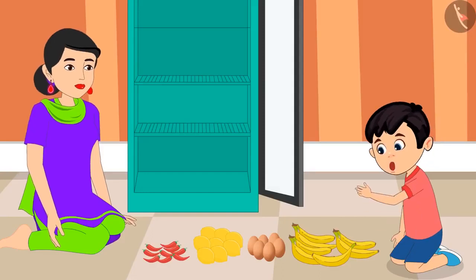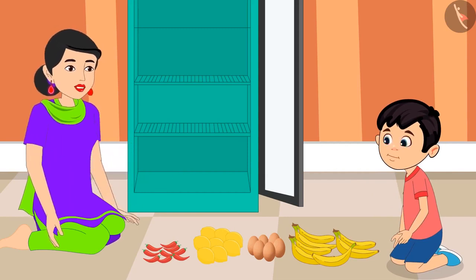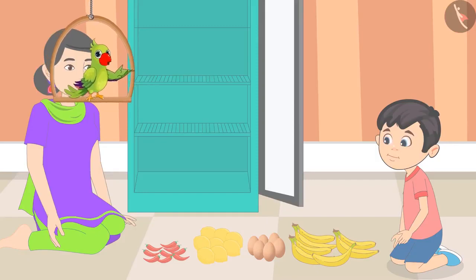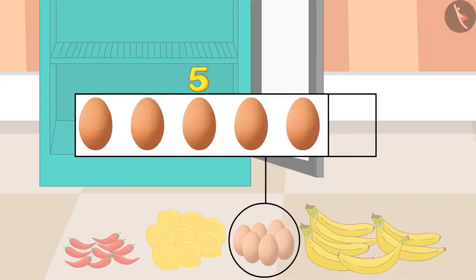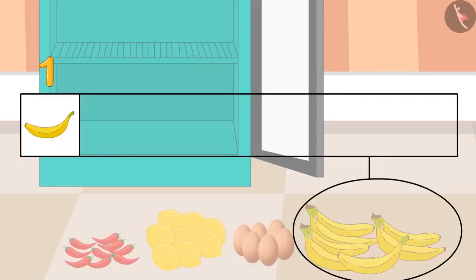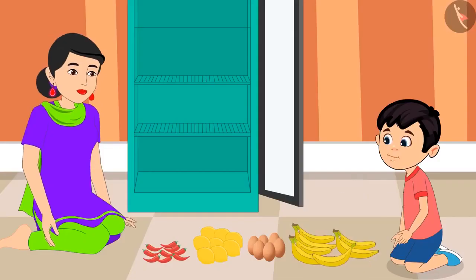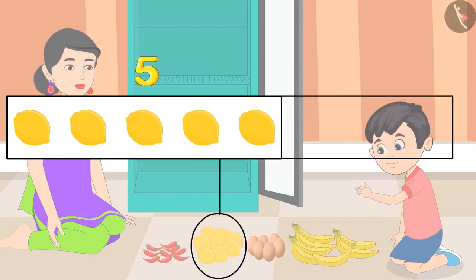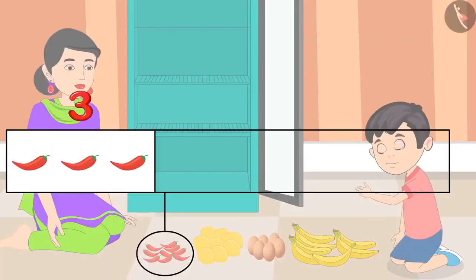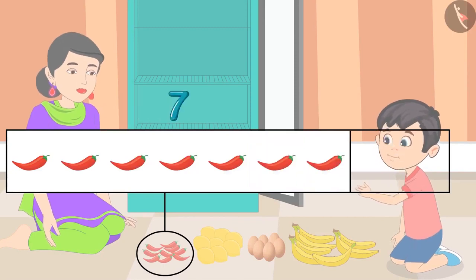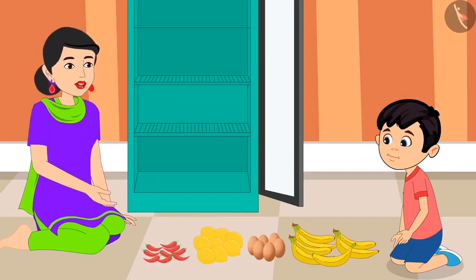Chotu's mother asks him to count each item one by one. Chotu counts: six eggs, seven bananas, eight lemons, and nine chilies. Very good Chotu, you counted all the items correctly. So children, did you also count the number of these items properly like Chotu?